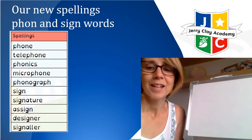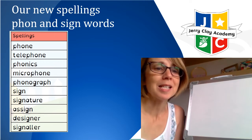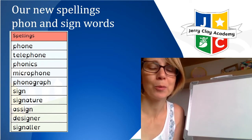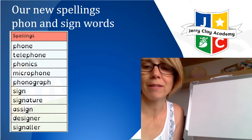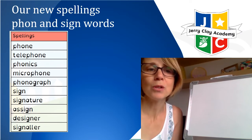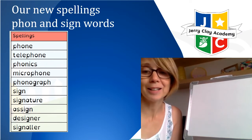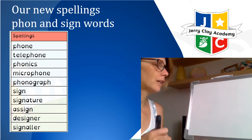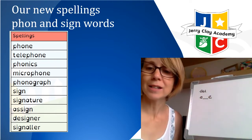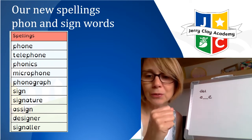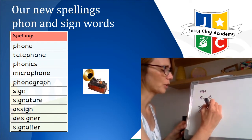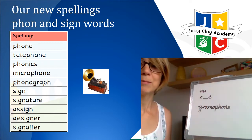First of all, let's have a look at our new spelling words today. They all have a 'phon' part to them — families of words which have a similar spelling within them. The first five words all have P-H-O-N in them. The first word is 'phone,' the second is 'telephone,' then 'phonics' — of course where we learn our different sounds — then 'microphone,' and then 'phonograph' or 'gramophone,' which are the really old-fashioned machines that played music.